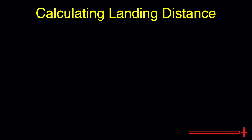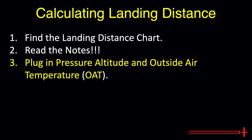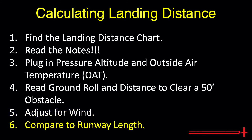To recap, the steps necessary to determine landing distances for the Cessna 172 are as follows. Step 1: Find the landing distance chart. Step 2: Read the notes. Step 3: Plug in pressure altitude and outside air temperature. Step 4: Read the matching ground roll and 50-foot obstacle clearance distances. Step 5: Adjust the distances for winds. And Step 6: Compare these distances to available runway length.